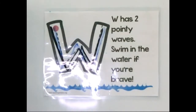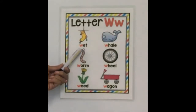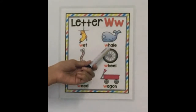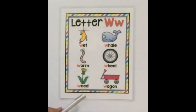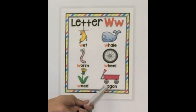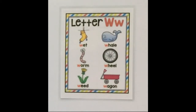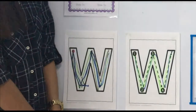What's the sound of the letter W? The sound of W is wuh. All the letters make a sound — the sound of W is wuh. W is for wet, whale, and worm, wheel and weed. We also have wagon. They all have the wuh-wuh sound.